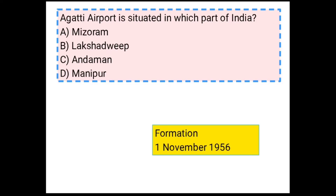Third question: Agatti Airport is situated in which part of India? Options: Mizoram, Lakshadweep, Andaman, Manipur. The answer is Lakshadweep. Lakshadweep was formed on 1st November 1956.